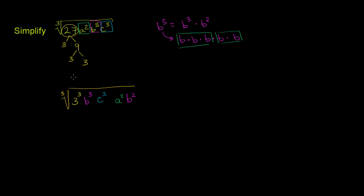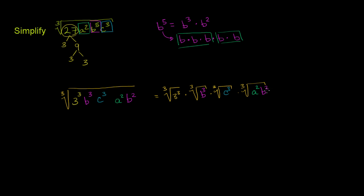We know from our exponent properties, or our radical properties, that taking the cube root of all of these things is the same as taking the cube root of the individual factors and then multiplying them. So this is the same thing as the cube root of 3 to the third, times the cube root of b to the third, times the cube root of c to the third, times the cube root of a squared times b squared. I'll group those last two together since we won't be able to simplify them further.